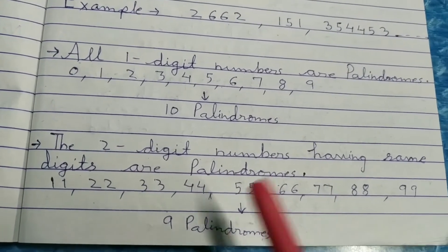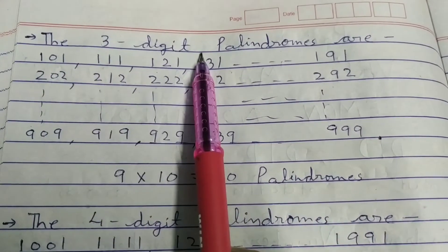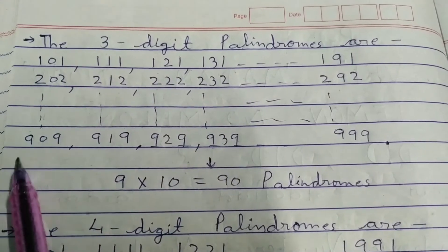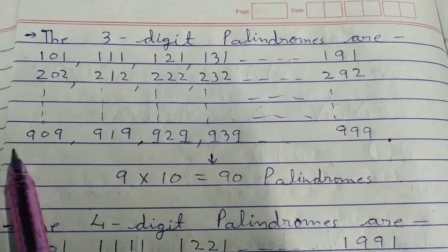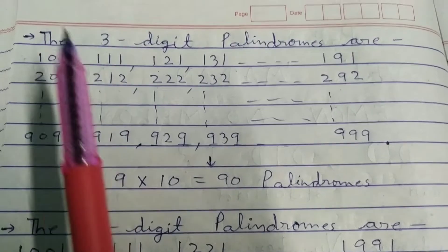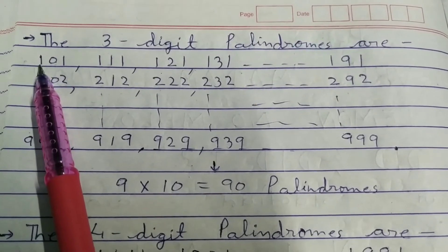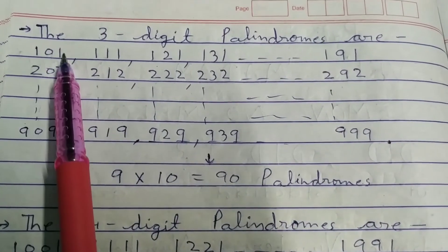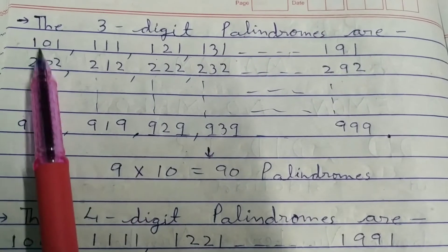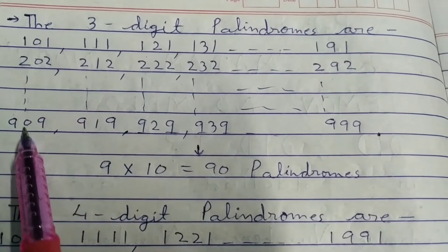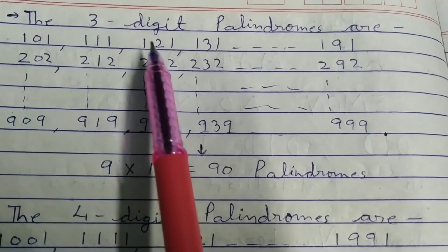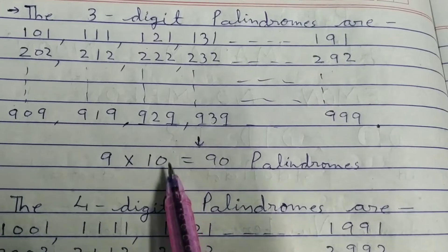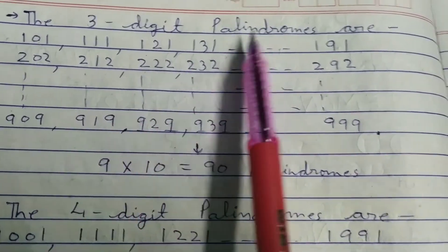For three-digit numbers, a number will be a palindrome if the first and last digit are the same — the center digit can be anything, but the first and last must match. The first digit can never be zero, otherwise it becomes a two-digit number. So for the first and last digit we have 9 options (1–9), and for the center digit we have 10 options (0–9), giving 9 × 10 = 90 three-digit palindromes.